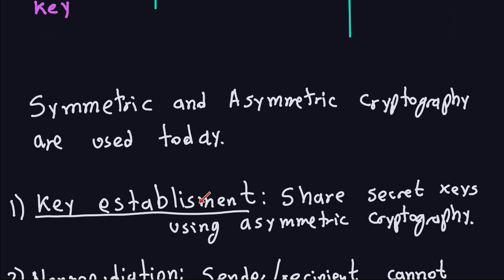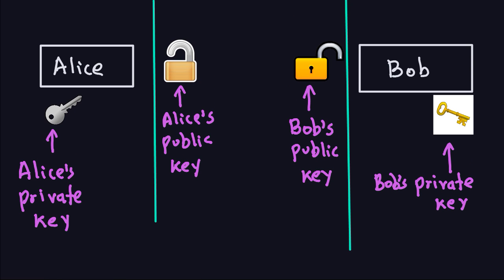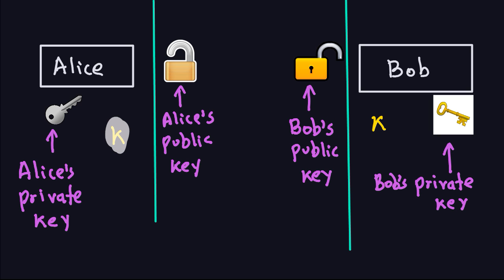The key establishment problem is solved here because you can share secret keys using asymmetric cryptography. For example, if Alice wants to send a symmetric key K to Bob to transmit large amounts of data, she takes that key, grabs Bob's public key, locks or encrypts it, and sends it to Bob. Bob receives the encrypted key, unlocks it with his private key, and then they both have the same symmetric key. With that symmetric key they can now communicate using symmetric cryptography, which is usually preferred for large amounts of data.